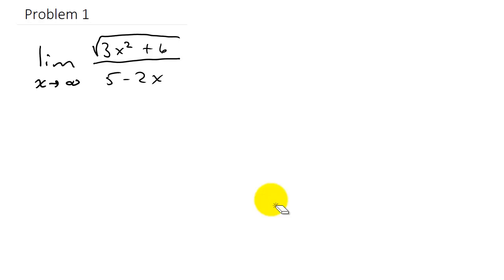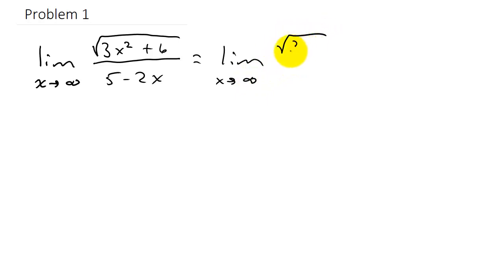Let's take a look at some problems dealing with limits as x goes to infinity. This limit is going to equal the limit as x goes to infinity of the square root of 3x squared over negative 2x. Since x is going to infinity, we're only keeping the term with the largest exponent from the numerator and the term with the largest exponent from the denominator — which in the numerator is 3x squared and in the denominator is negative 2x.